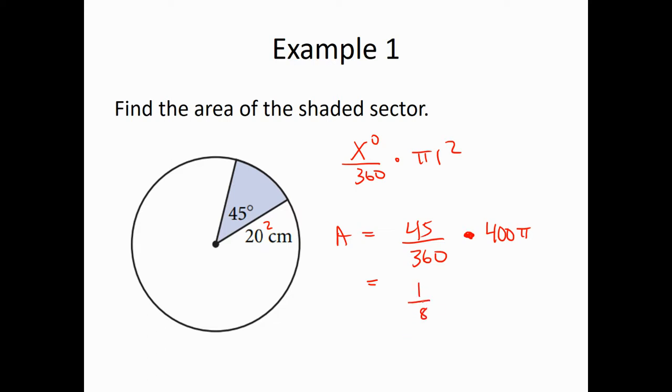So then you could just type in 45 over 360 in your calculator, or you could reduce it. It's exactly 1 eighth, or 0.125 if you're on the calculator. And then we just multiply that by 400. Multiply that by 400, and you get exactly 50, and then we put the pi on at the end.